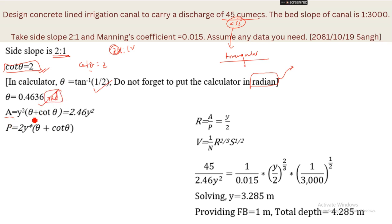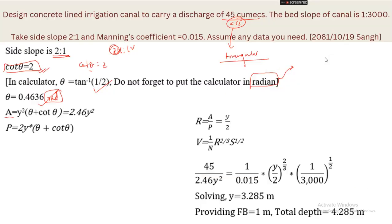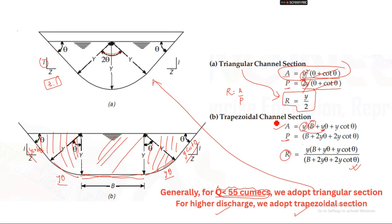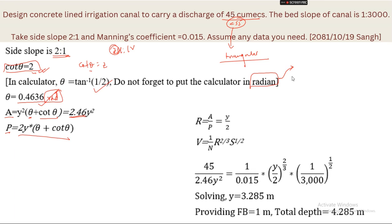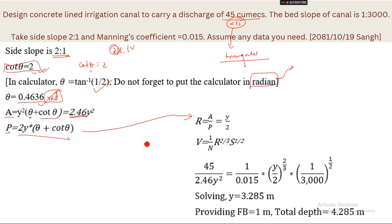Now, A = y²(θ + cot θ) = y²(0.4636 + 2) = 2.4636y². And R = y/2, as derived earlier for the triangular section. So we have expressions for area and hydraulic radius in terms of depth y.